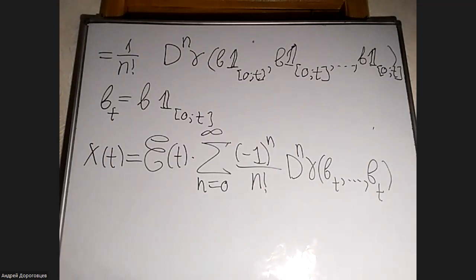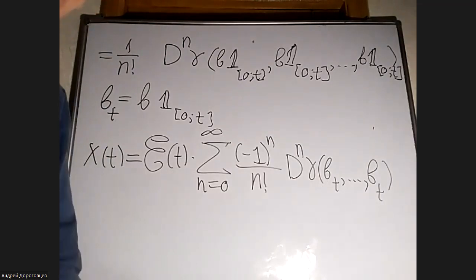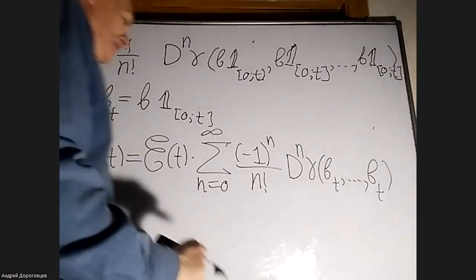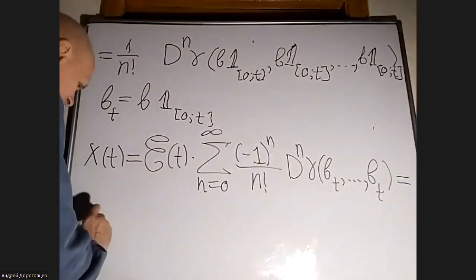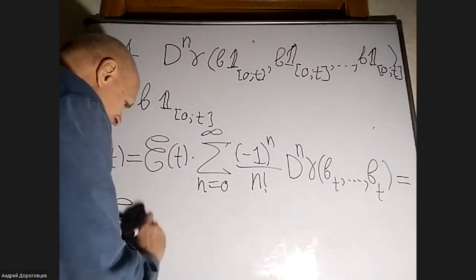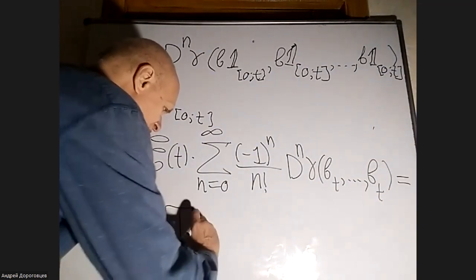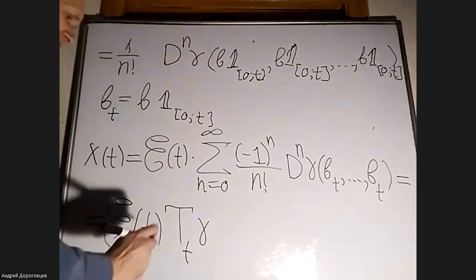This equals one over n-factorial times D^n gamma applied to the function b_t(·) = B(·) multiplied by the indicator of [0,t], in all n arguments. So we have the application of the n-th stochastic derivative to this function b_t.